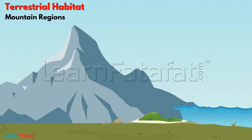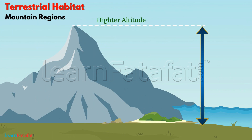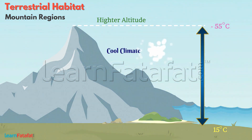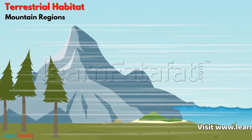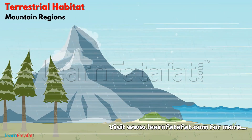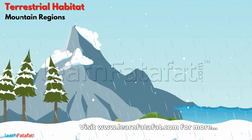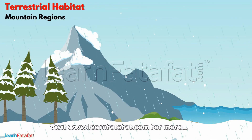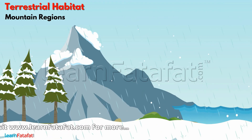Mountains are much above the sea level. With higher altitude, the temperature decreases, due to which there is a cold climate in the mountains. The air is freely flowing through these regions. There is frequent rainfall and snowfall in these regions.